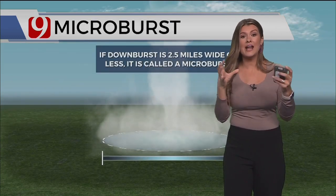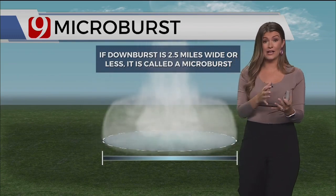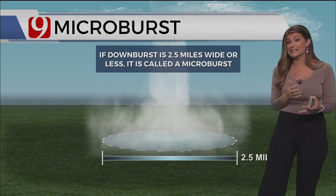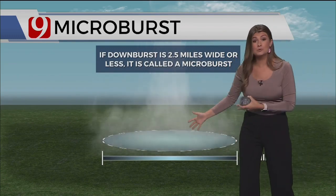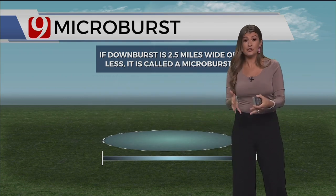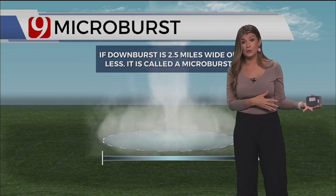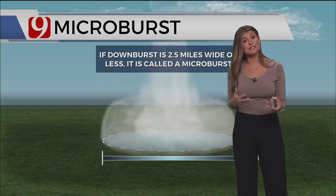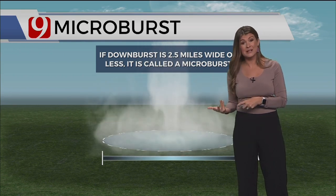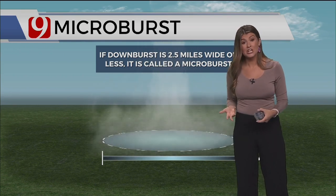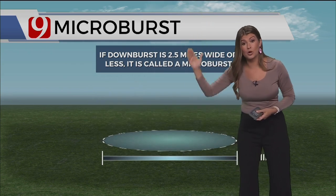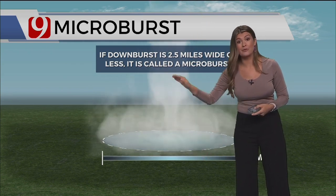Now a microburst is a downburst that happens in a very small area, usually about two, two and a half miles wide, sometimes smaller than that. That means that you and your neighborhood may have some pretty extensive damage, but you just drive down the road and there's no damage whatsoever. Some folks can think that almost looks like tornado damage, but it's straight line wind damage from a storm that just unleashes and all of its wind and rain rushes down on top of you.